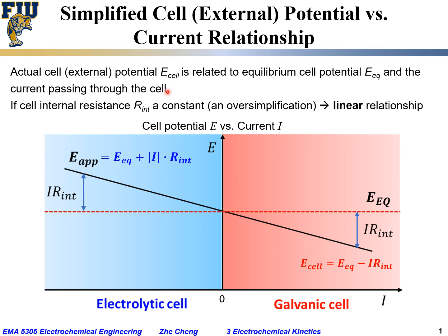This slide shows that cell potential depends on current. For the galvanic cell, the measured cell potential is lower than the equilibrium cell potential, while on the electrolytic side the applied external cell potential is higher than the equilibrium cell potential. In both cases, the difference between the actual cell potential and the equilibrium cell potential equals the absolute value of current times internal resistance. When current is zero, the cell potential equals the equilibrium cell potential.